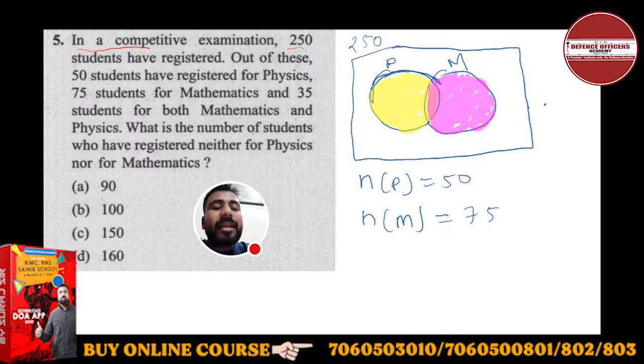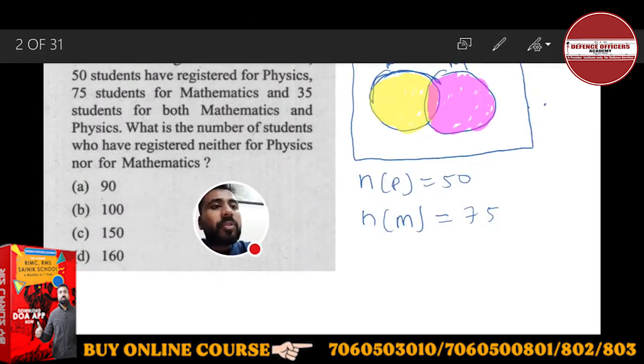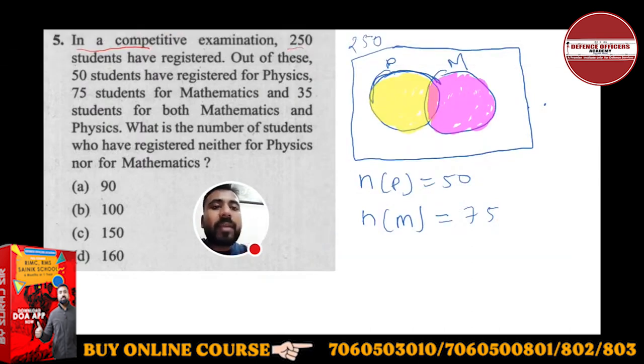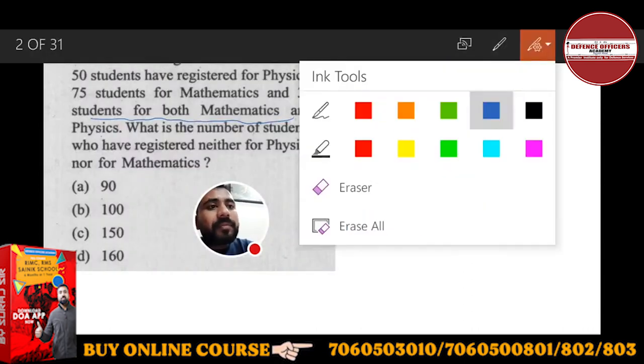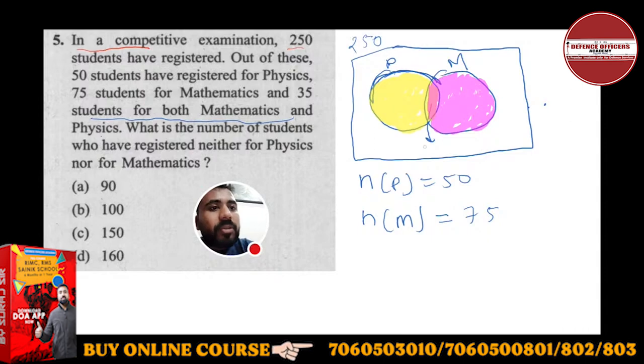I cannot write directly 50 in P's place because some portion of mathematics is also common. To find that common portion, there's a very good method. And what is given to you? 35 students for both maths and physics. This common portion is 35 given to you.